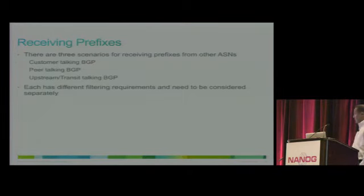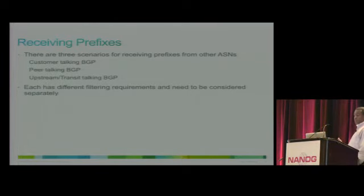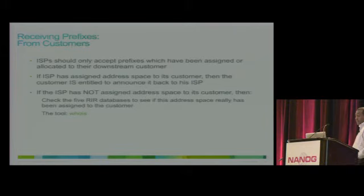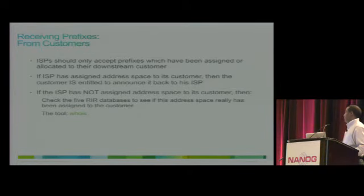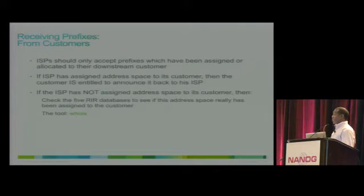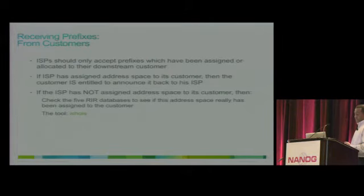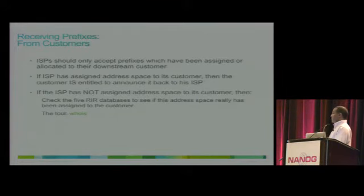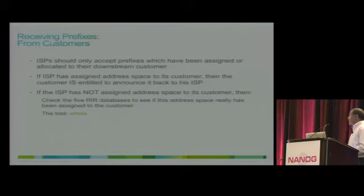Receiving prefixes: a service provider may receive prefixes from a customer, a peer, or a transit provider. From a customer: an ISP should not accept prefixes that have been assigned to the customer by another ISP. If the customer has prefixes assigned by another ISP, this ISP should not advertise those prefixes to the rest of the internet — should not even receive them. But if the ISP assigned those prefixes to the customer, the customer can advertise them, and it's useful particularly if connected at multiple points, providing redundancy and load balancing.